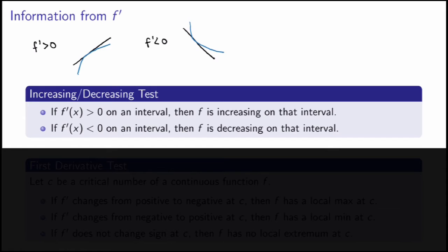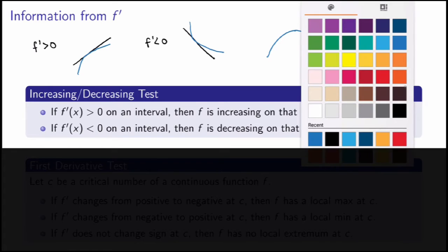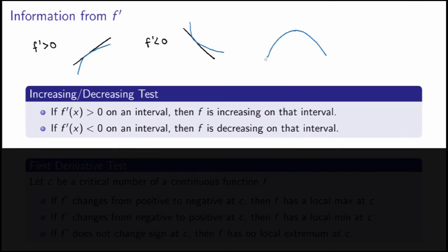One direct application of the increasing/decreasing test is determining whether a critical number is a local max or min. At a local max, the function is increasing on one side and decreasing on the other. So the tangent lines have positive slope before the max, the derivative is zero at the max, and then becomes negative on the other side.